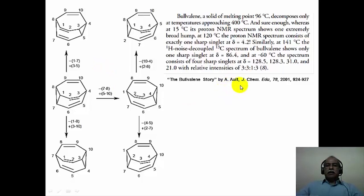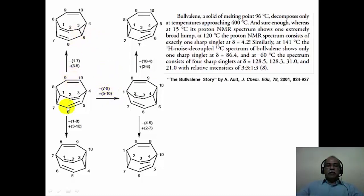There is a nice article in the Journal of Chemical Education by Ault, called 'The Bulvaline Story,' which makes very interesting reading to understand the 3-3 sigmatropic rearrangements that can take place in bulvaline. If you look at bulvaline rearrangement, every other product that is formed upon rearrangement is also a bulvaline. So this is considered to be a degenerate rearrangement.